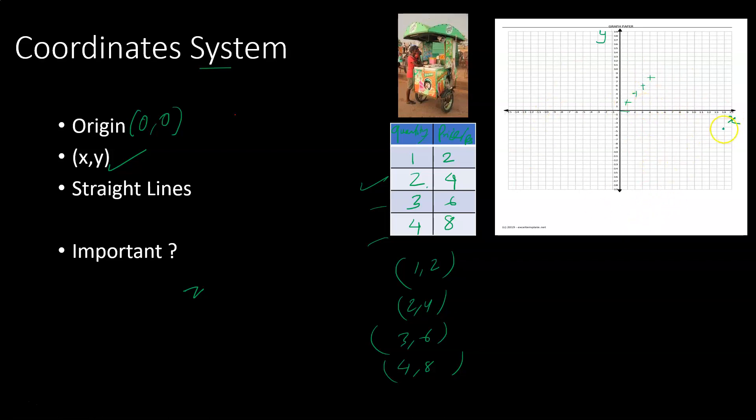I will plot the ice cream quantity. Each point represents the ice cream quantity. These points form a straight line. You can see the straight line going through point zero, zero.